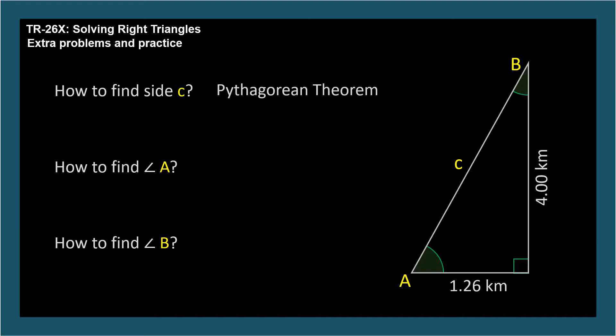To find side c, we'd use the Pythagorean theorem. We find angle A with the arc tangent function. Opposite over adjacent is 4.00 kilometers over 1.26 kilometers. We also use arc tangent to find angle B, with opposite and adjacent switching roles. Arc tan of 1.26 kilometers over 4.00 kilometers.